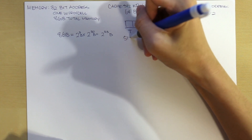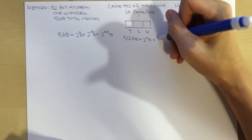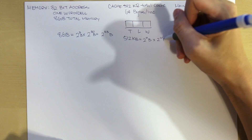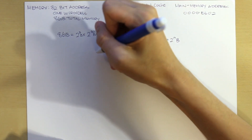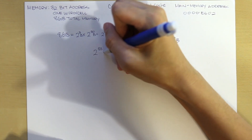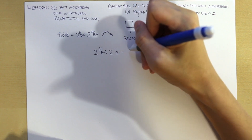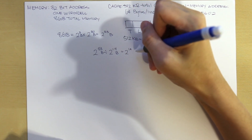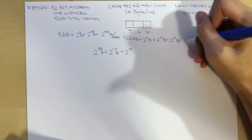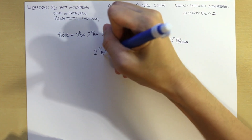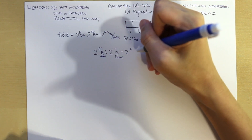We know that we have 512 kilobytes of cache, which breaks down to 2^9 bytes times 2^10 bytes, equaling 2^19 bytes. If we divide to find cache per memory, we take the main memory and divide: 2^33 divided by 2^19, which gives us 2^14 cache per memory. The units are bytes per memory, bytes per cache, giving us cache per memory.